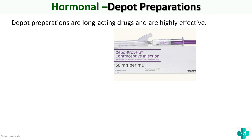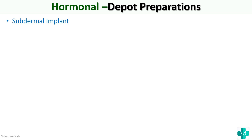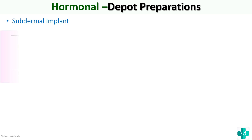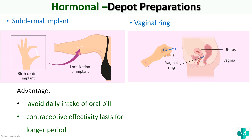Another type of hormonal contraceptive is depot preparations — long-acting drugs that are equally effective. They can be injectable preparations, subdermal implants, or vaginal rings. The advantage is that you don't have to take a pill every day, so there is more patient compliance. Subdermal implants are kept under the skin, usually in the arm region, and the contraceptive effect lasts for a long period.